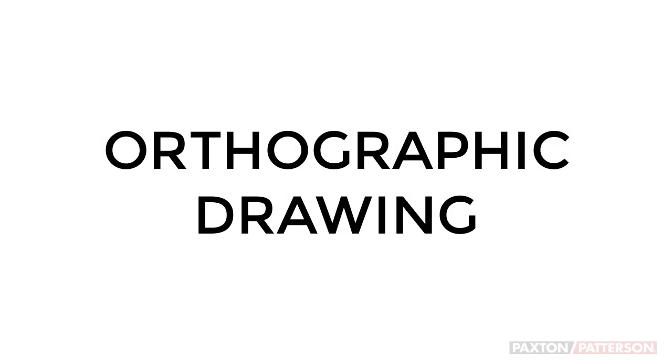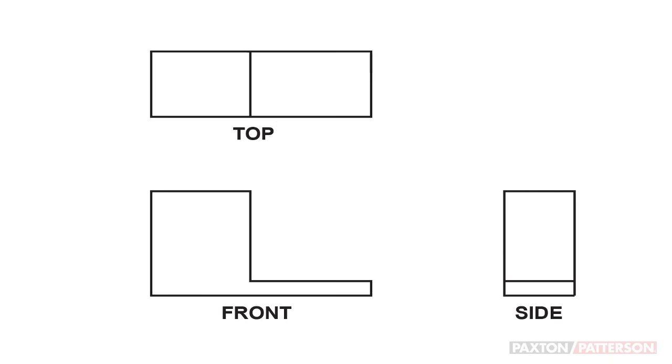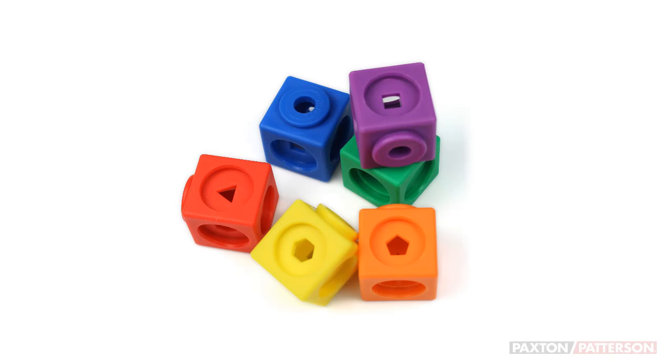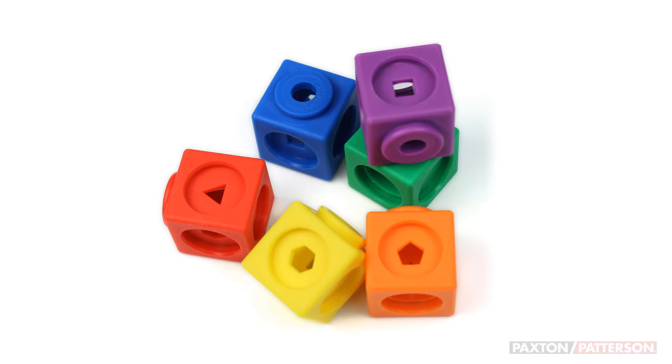An orthographic drawing is used to represent a three-dimensional object using several two-dimensional views. So how do you make an orthographic drawing? In this example, I'll be drawing a three-dimensional object made of blocks that snap together.